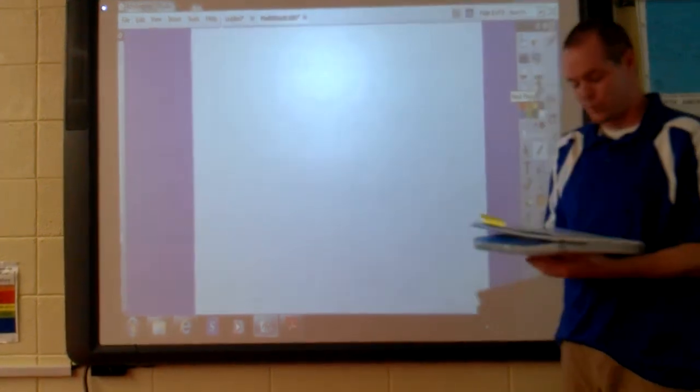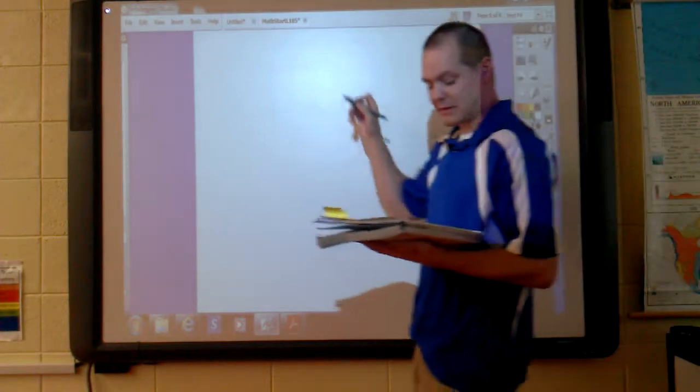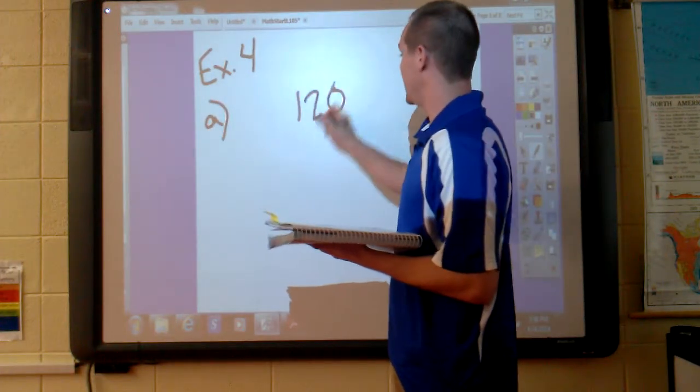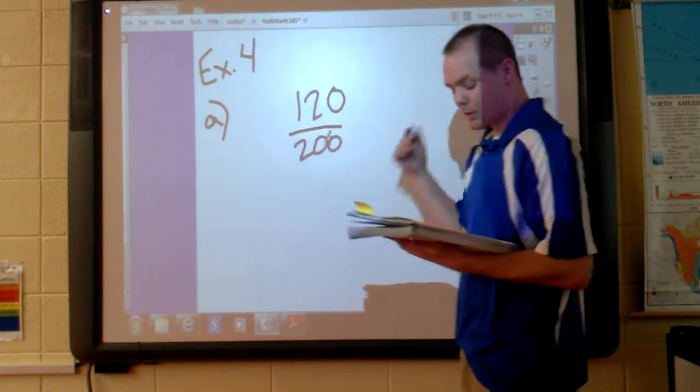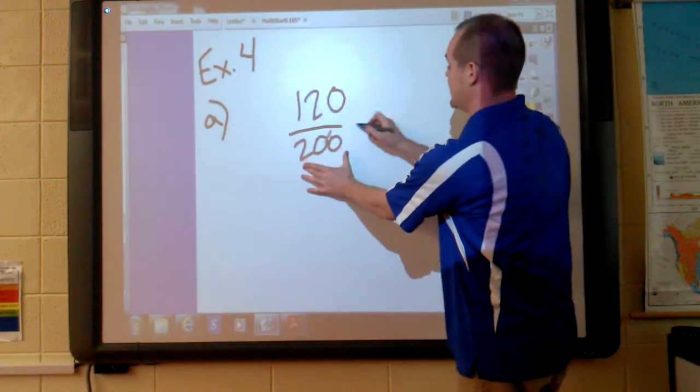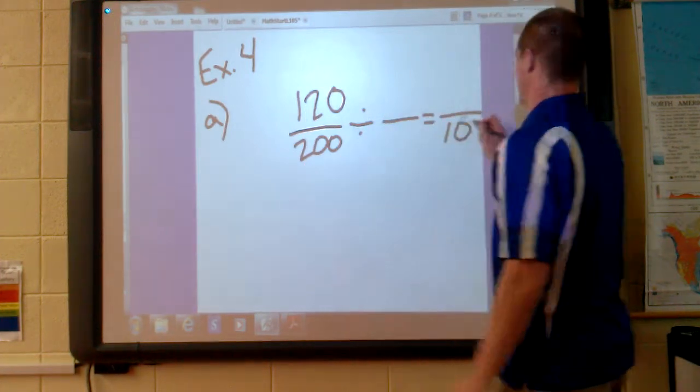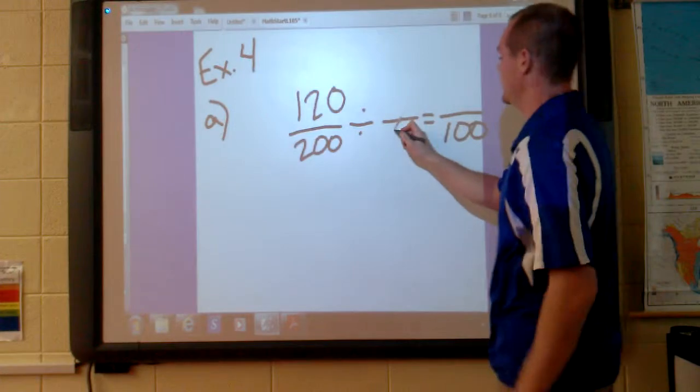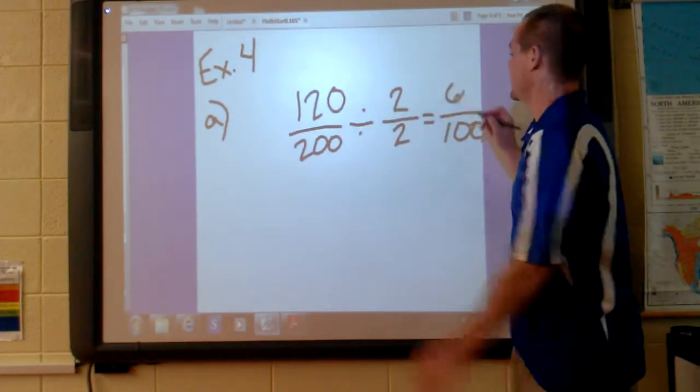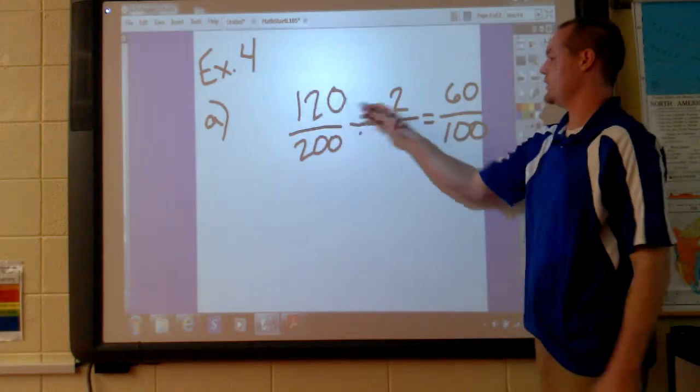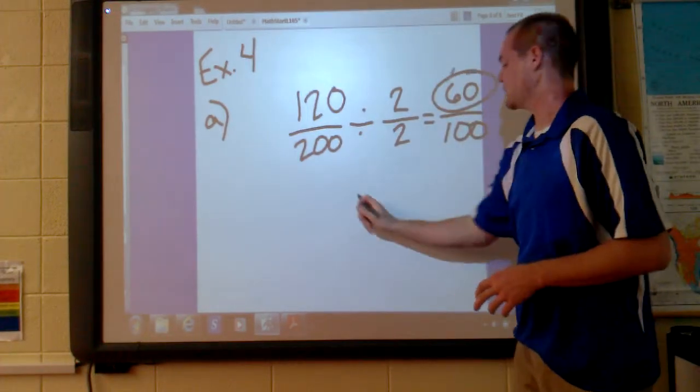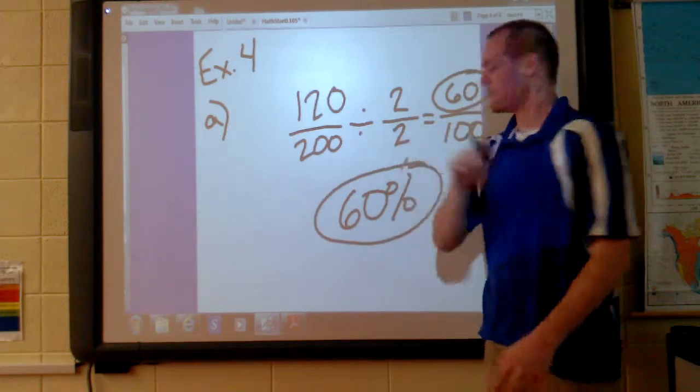We're going to do two lesson practices. I'm going to start with lesson practice A, for example number 4. It says if 120 of the 200 students were girls, what percent of the students were girls? Now, again, we need to take this denominator and get it to 100. It's greater than 100, so we need to divide. 200 divided by what is 100? We know that 200 divided by 2 is 100. This fraction needs to be equal to 1, so it's 2/2. 12 divided by 2 is 6. 0 divided by 2 is 0. So 120 divided by 2 is 60. What is 120 out of 200 as a percent? Your answer is right there. 60 percent.